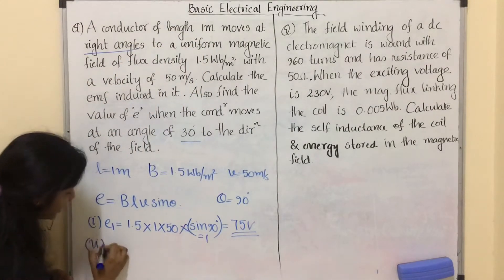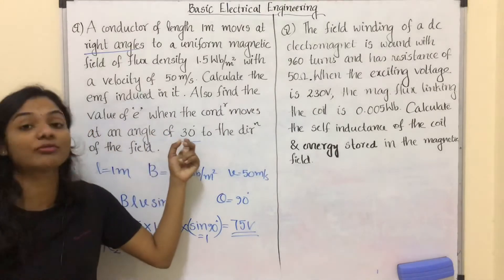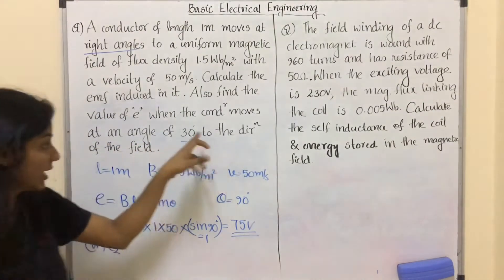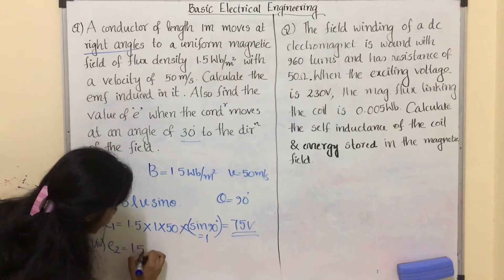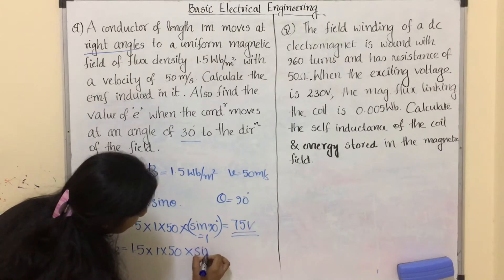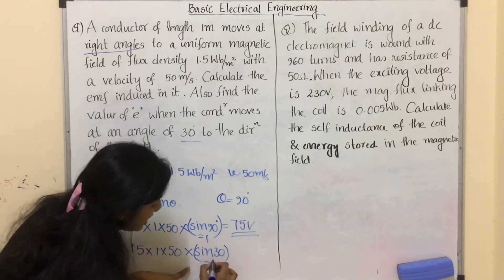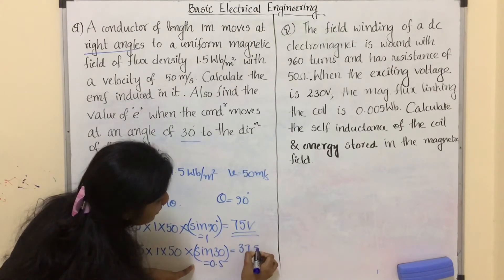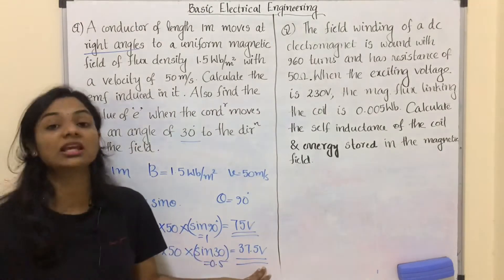For the second part, E2 is the induced EMF when the conductor moves at an angle of 30 degrees. Direct application of formula: instead of sinθ we put sin30°. The value of sin 30 is 0.5, so E2 = 1.5 × 1 × 50 × 0.5, which equals 37.5 volts — the induced EMF in the conductor.